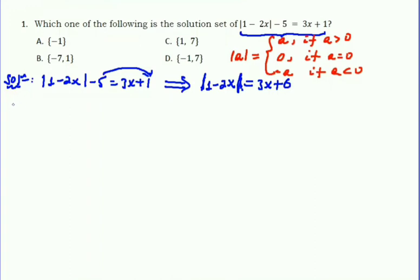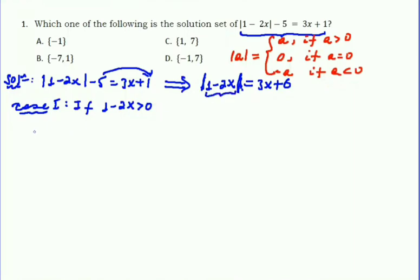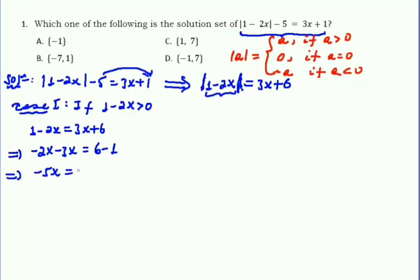There are two cases. In Case 1, if 1 minus 2x is positive or greater than zero, we can take out the absolute value as it is: 1 minus 2x equals 3x plus 6. Collecting like terms: minus 2x minus 3x equals 6 minus 1, giving minus 5x equals 5. Dividing both sides by minus 5, x equals minus 1.